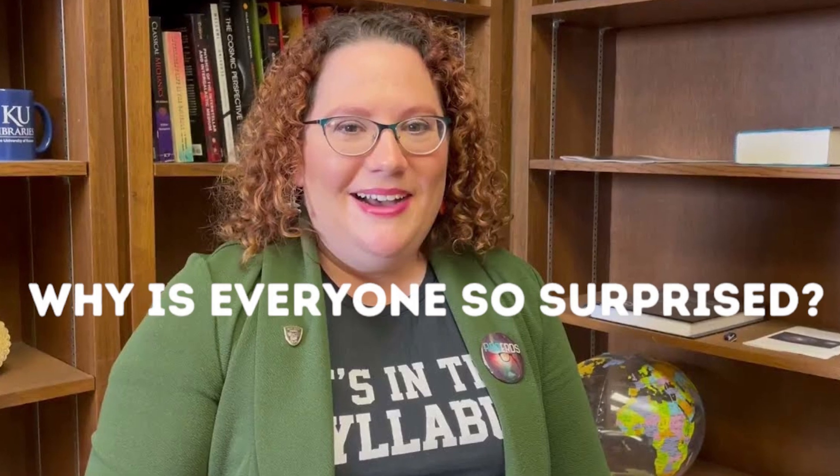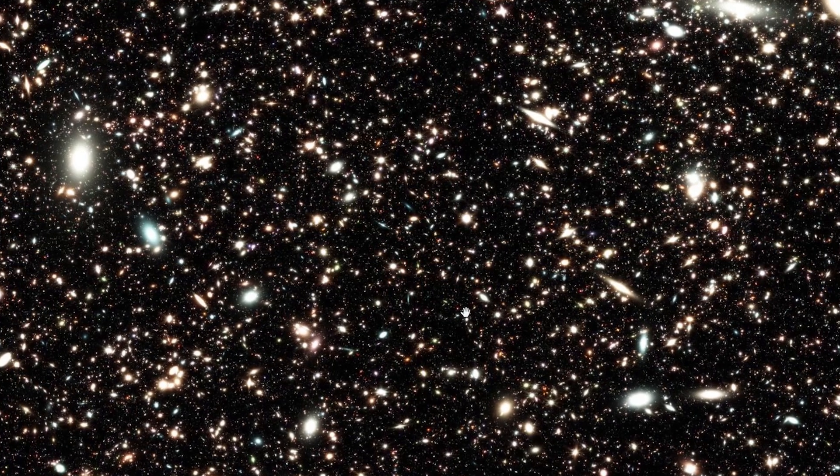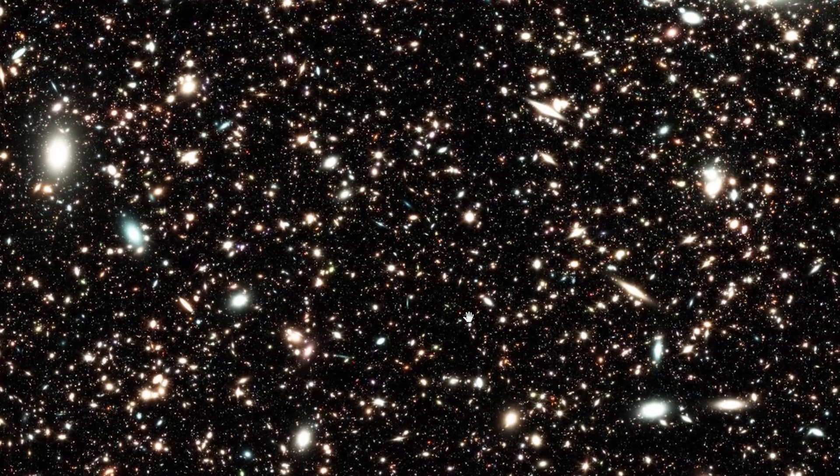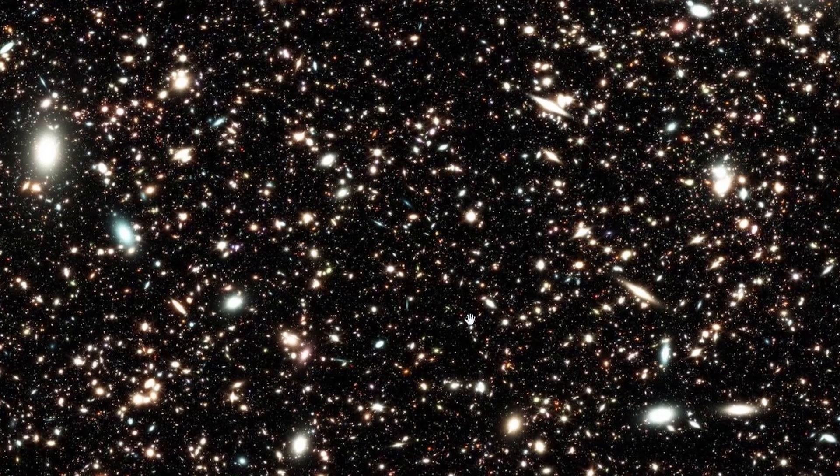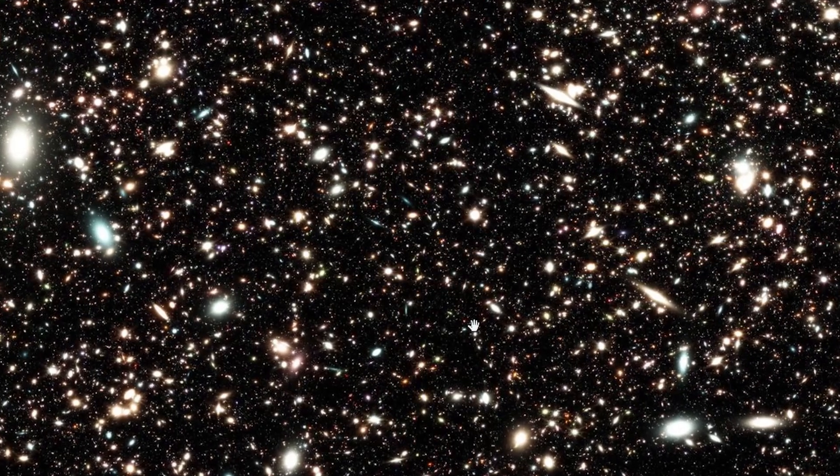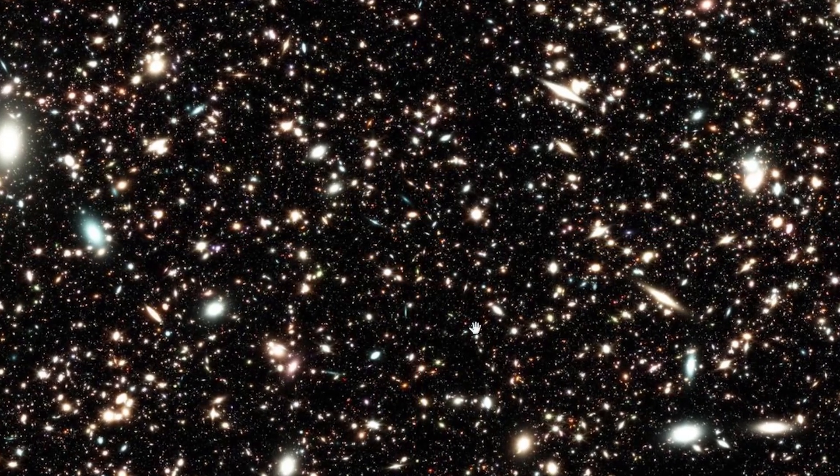You can almost hear Alison Kirkpatrick, a senior astronomer at the University of Kansas, questioning her life's work as she lies in bed. Why is everyone so surprised? Well, the galaxies captured by the James Webb don't behave as you would expect according to the Big Bang hypothesis. They are too small, too uniform, and too old. Also, there are too many of them.